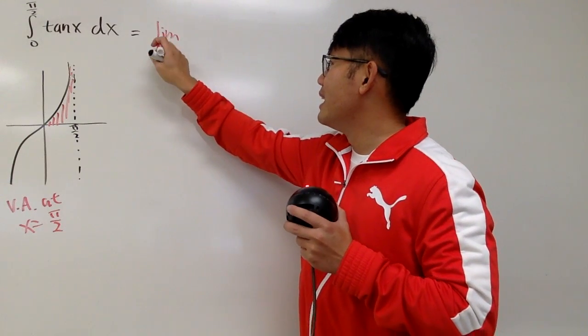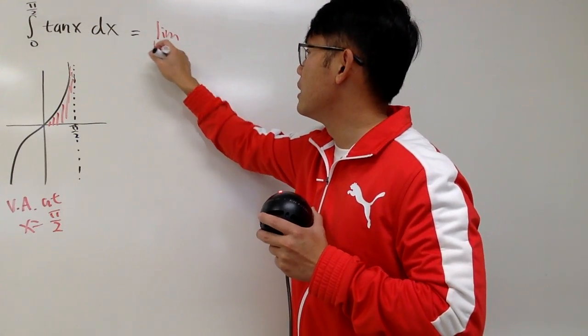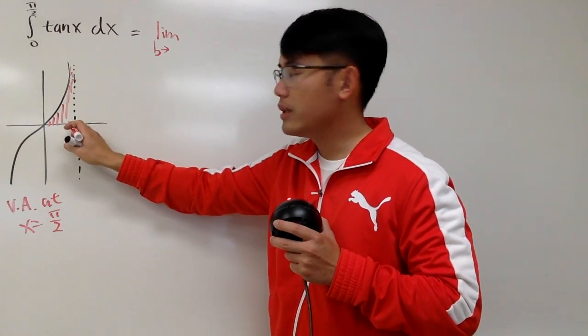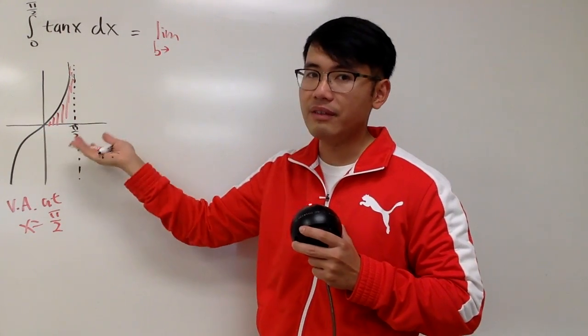But, you know, let's do the limit. And it's on the top right here, so I'll put on B. It goes to, technically, pi over 2 is a minus, because you are approaching pi over 2 from the left-hand side.